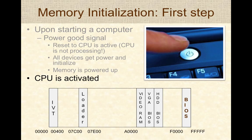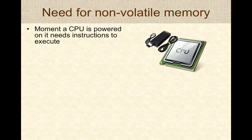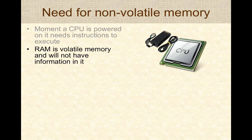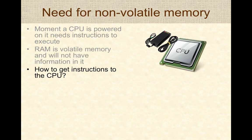Finally, the CPU is activated. The moment the CPU is activated, it needs instructions to execute — that is the job of the CPU. However, RAM is volatile memory, meaning any data that was in there before is lost. So when a computer is powered on, the RAM will not have any information in it. The question becomes: how do we get instructions to the CPU so the CPU can start processing?